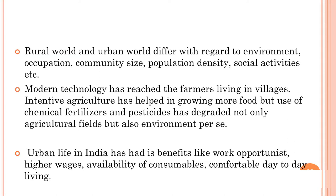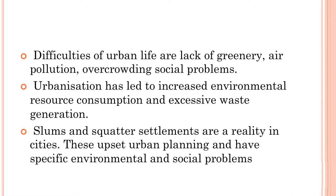Rural and urban worlds differ with regard to environment, occupation, community size, population density, and social activity. Modern technology has reached the farmers living in villages. Intensive agriculture has helped in growing more food, but the use of chemical fertilizers and pesticides has degraded not only agricultural fields but also the environment. Urban life in India has benefits like work opportunities, higher wages, availability of consumables, and a comfortable day-to-day life. Urbanization has led to increased environmental resource consumption and excessive waste generation. Slums and squatter settlements are a reality in cities, upsetting urban planning and creating specific environmental and social problems. Dear learners, this is all about Lesson 8, Human Society. We will meet again with a new program of environmental science. Thank you.